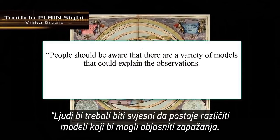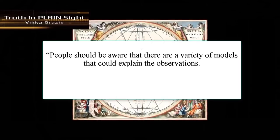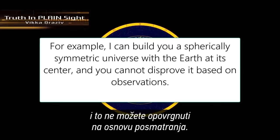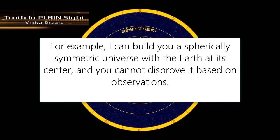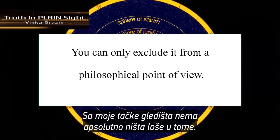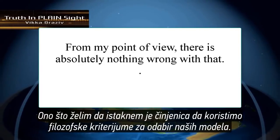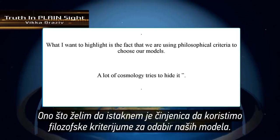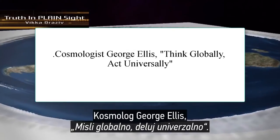People should be aware that there are a variety of models that could explain the observations. For example, I can build you a spherically symmetric universe with the Earth at its center, and you cannot disprove it based on observations. You can only exclude it from a philosophical point of view. From my point of view, there is absolutely nothing wrong with that. What I want to highlight is the fact that we are using philosophical criteria to choose our models. A lot of cosmology tries to hide it. — Cosmologist George Ellis.